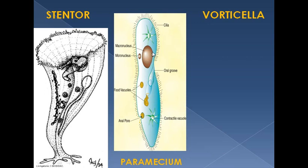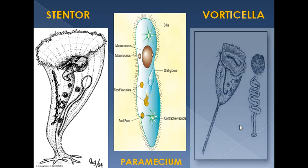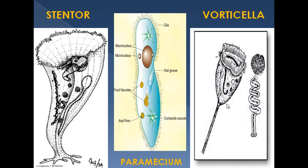Here you can see pictures of different ciliates: this is Paramecium showing the micronucleus and macronucleus and the contractile vacuole. Stentor is a sessile form attached to a substrate. Vorticella is bell-shaped and also sessile, attached with a contractile stalk to the substrate.